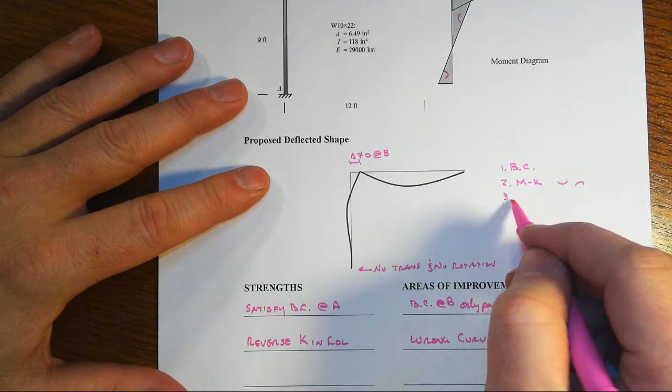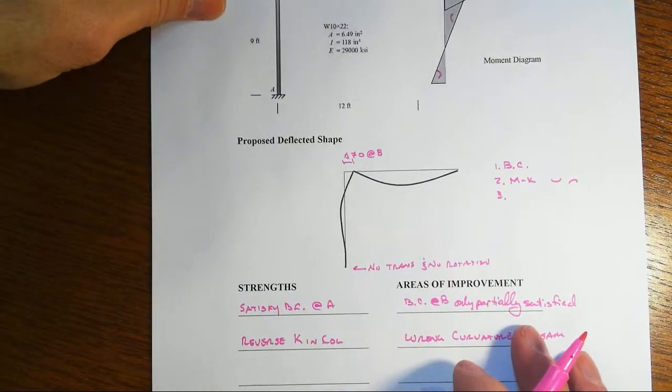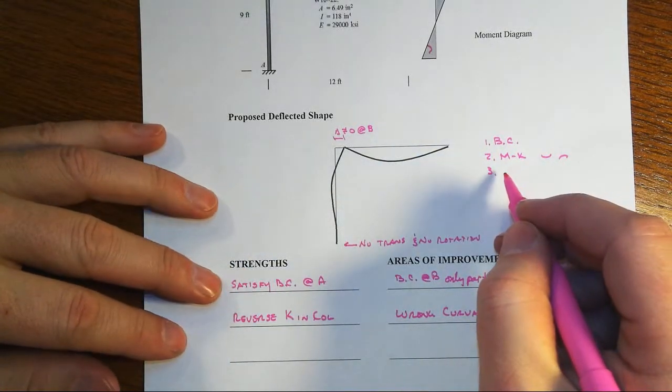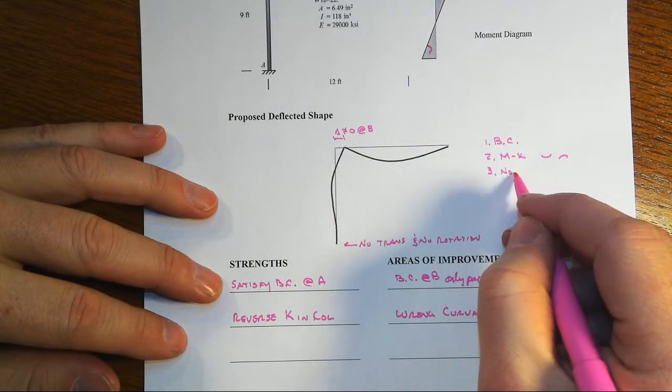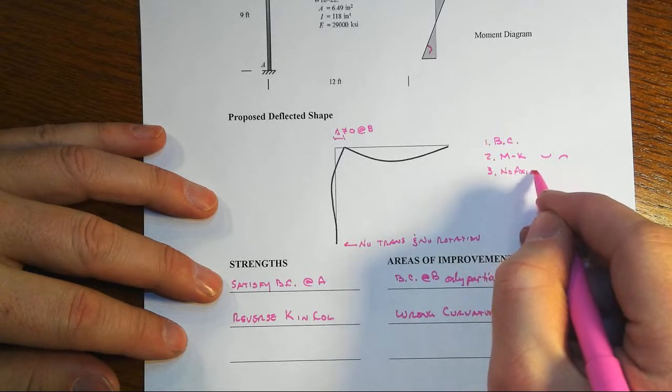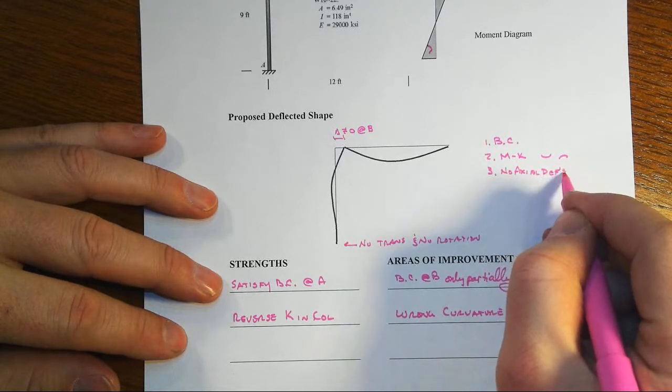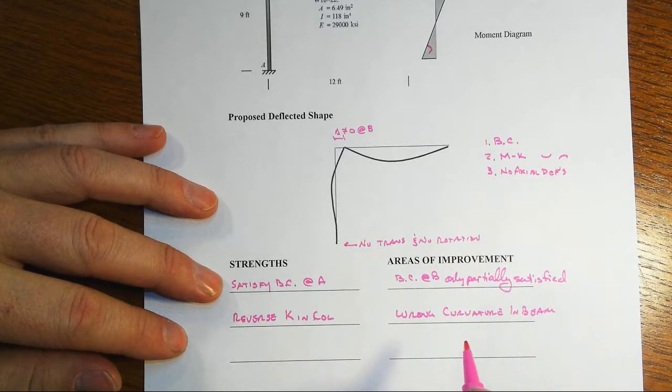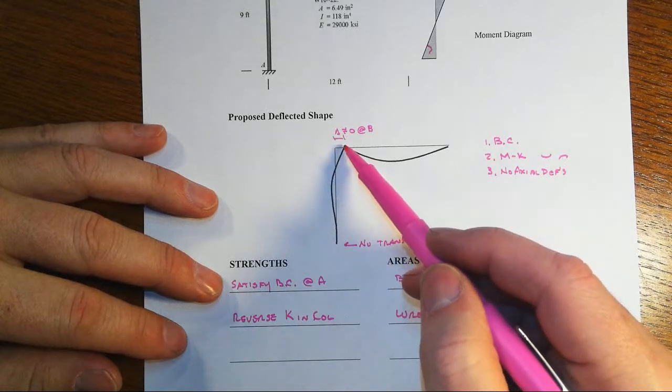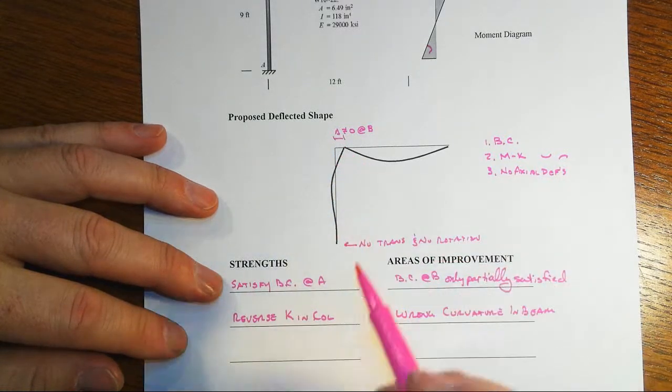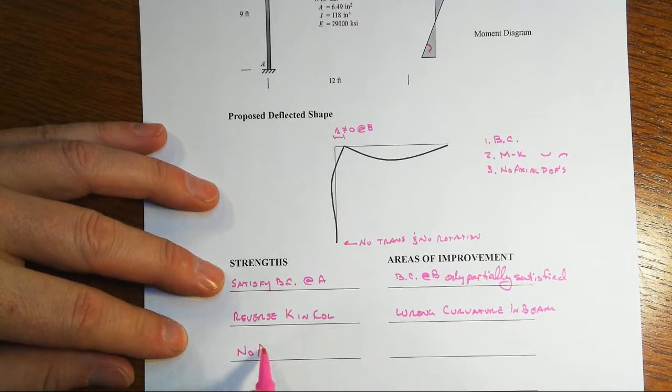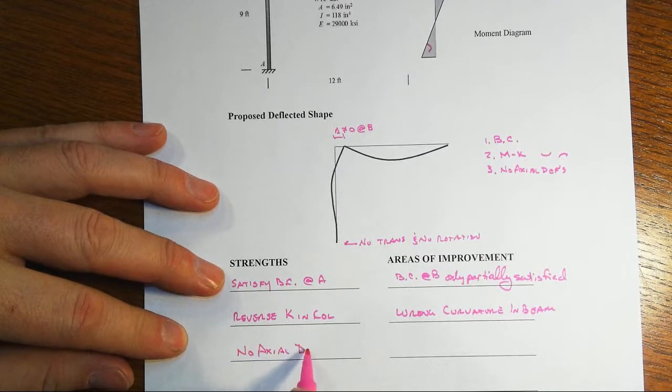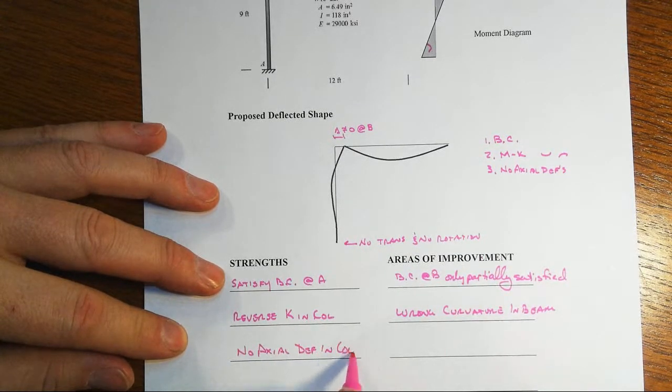Then we also need to have no axial deformations, in no particular order here. This is kind of how I remember them as I go. And we sort of already have this set up with a column, so that's good. There's no axial deformation in the column.